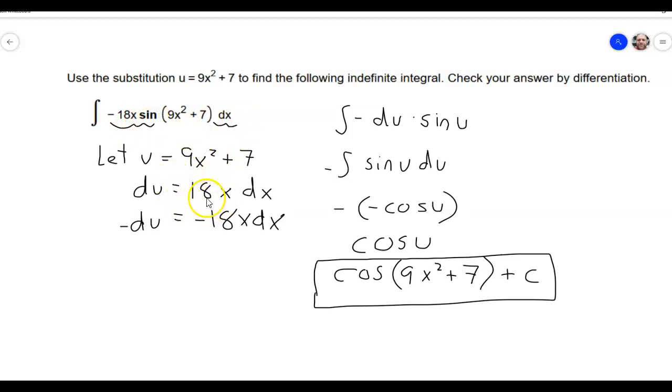Now, even if this came out to like 9x dx, I still could have multiplied both sides by like a negative 2. And I would have gotten negative 2 du is equal to negative 18x dx. So we can do it as long as it's a multiple. So basically, the x has to be there in order for this to work.